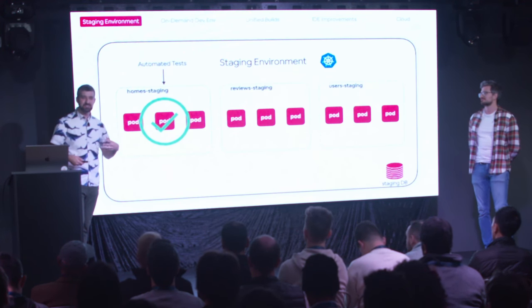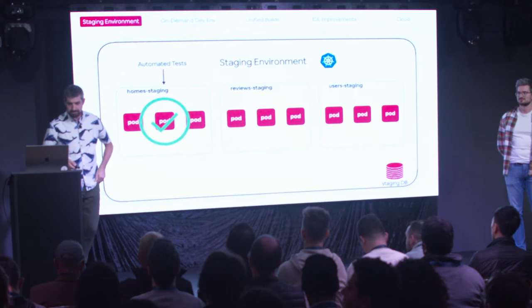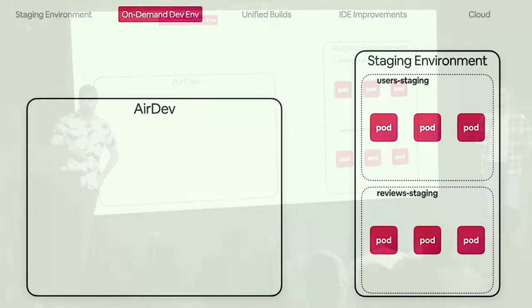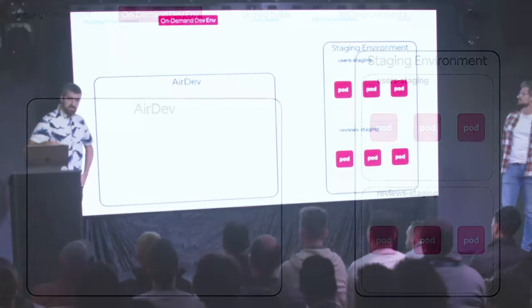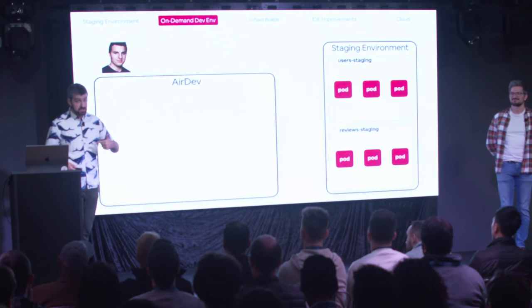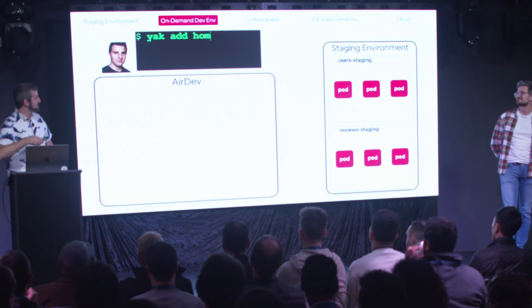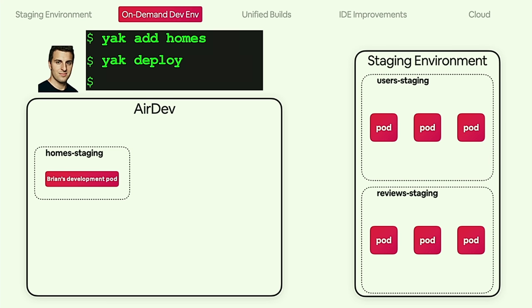Now that we have a solid staging environment to build on, let's talk about the dev environment itself. At Airbnb we have an on-demand Kubernetes-based dev environment called AirDev. My personal metric for success is whether our CEO Brian Chesky is using the tools I've built — he's not right now, but next quarter we'll get him. We want to make it so easy that even the CEO can use it. So with our Yak CLI, he would do `yak add homes` to deploy the homes service, which takes the staging version of the service and does some manipulations to put it into the AirDev context.